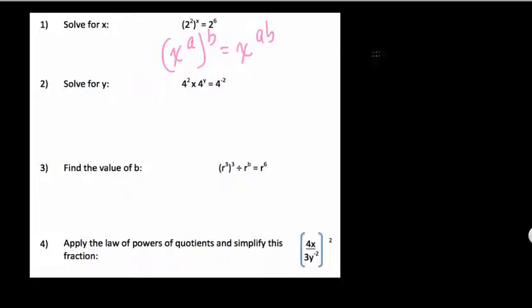In this case, we have 2 squared to the x power equals 2 to the 6th. Well, if I multiply these two exponents, and if these two sides of the equation are equal, that also means that 2x should equal 6. They're the same bases and everything.